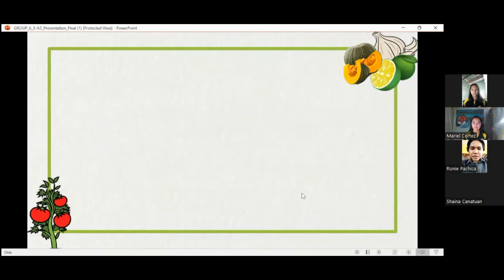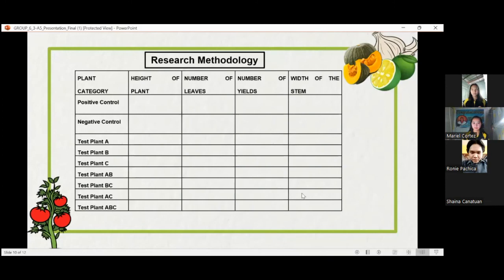For the experimental procedure, that is the checklist that we are going to use in observing the tomato plants or the test plants using the organic fertilizer and the synthetic fertilizer.